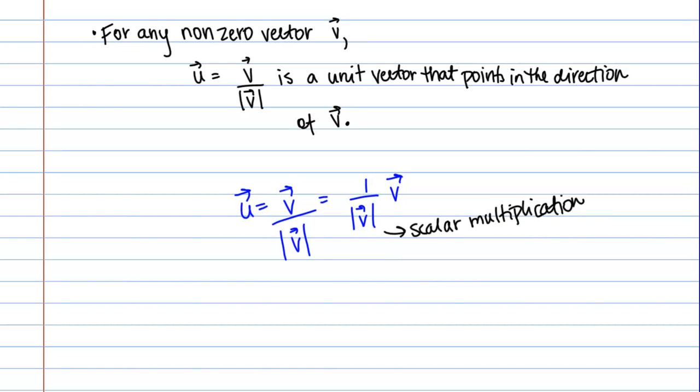That's why it makes sense that this new vector u is going to point in the direction of v, because it's just a scalar multiple. That explains that, but why is it a unit vector?